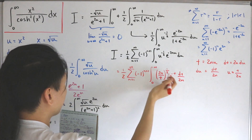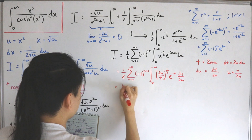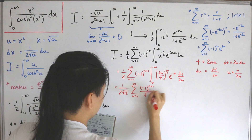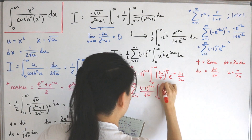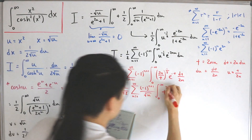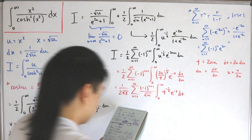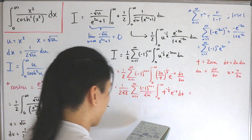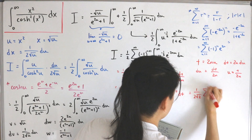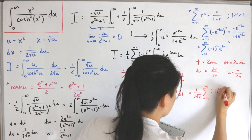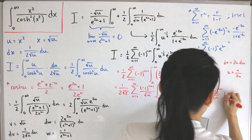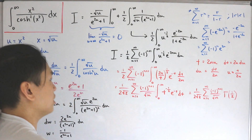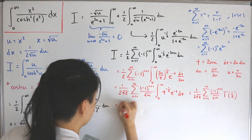The remaining integral from zero to infinity of t^(-1/2) e^(-t) dt is a gamma function, specifically Gamma(1/2). Using Euler's reflection formula, Gamma(1/2) equals the square root of pi. So we now have 1 divided by (2 times square root of 2), times the infinite sum of (-1)^(n+1) divided by the square root of n, times the square root of pi.